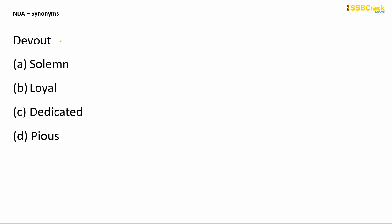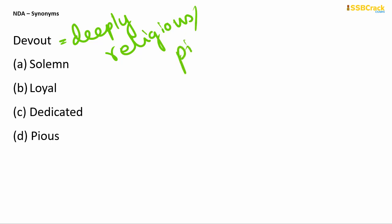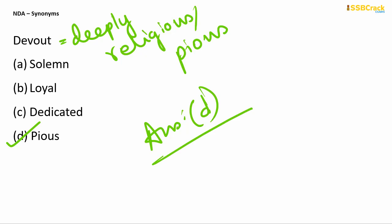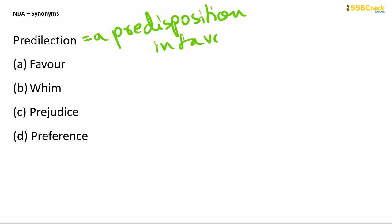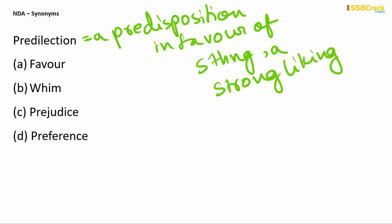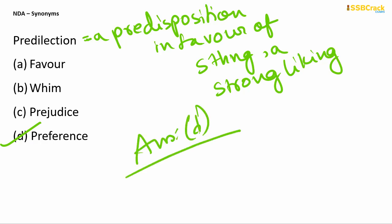A devout person is deeply religious — in other words, pious. So 'pious' is the synonym of devout, and your answer is option D. The next word is predilection. Predilection means a predisposition, a kind of bias in favor of something or someone — having a strong liking for that person or thing. In other words, a preference. So 'preference' is the synonym of predilection, and your answer is option D.